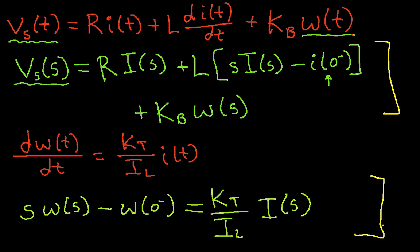The next thing we need to do is we need to combine these two equations and solve for the ratio of omega s over v sub s. That will give us the transfer function. But before we do that, we need to think about the initial conditions for a moment.